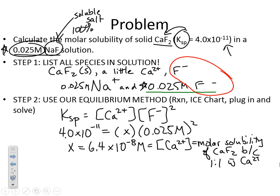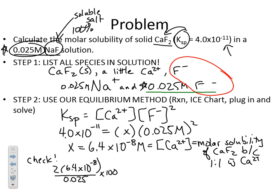We do want to check our assumption. We have 2x, so I'll do 2 × 6.4 × 10⁻⁸, then divide by 0.025 and multiply by 100. X is tiny — this is an absolutely tiny value. I get 5.12 × 10⁻⁴ percent, which is definitely less than 5%, so our assumption is good.